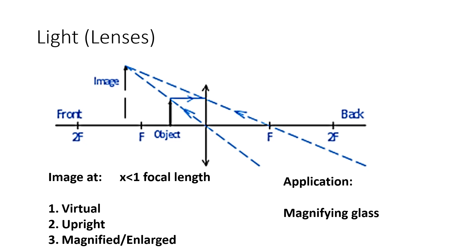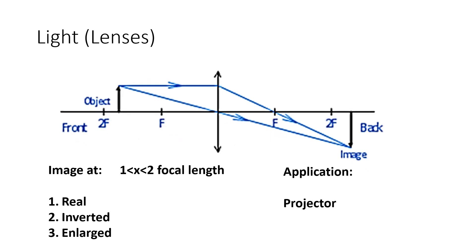We'll now move on to the last three diagrams, which are very similar to each other as they are related to objects at 2F or near the 2F focal length. Draw the diagram and place the object between one focal length and two focal length. Draw a horizontal line through one F and another through the center — they should coincide further than the two focal length. Image and object are on different sides. Three properties: real, inverted, enlarged. Application: projector, because the image is bigger.